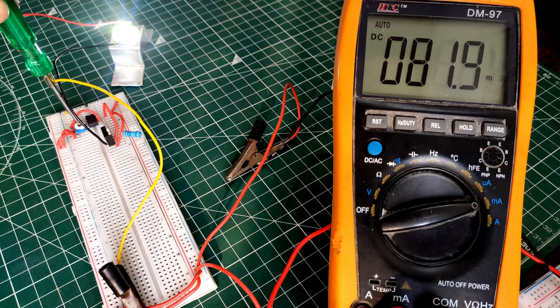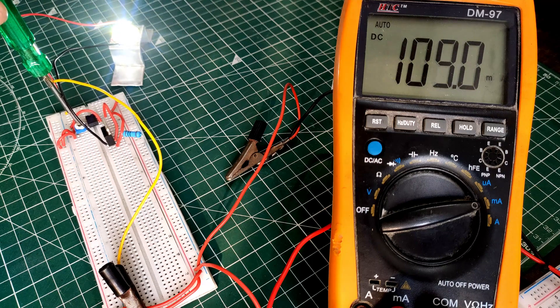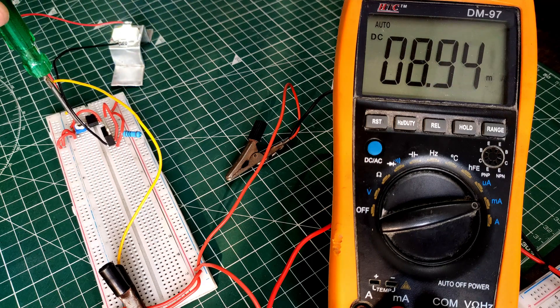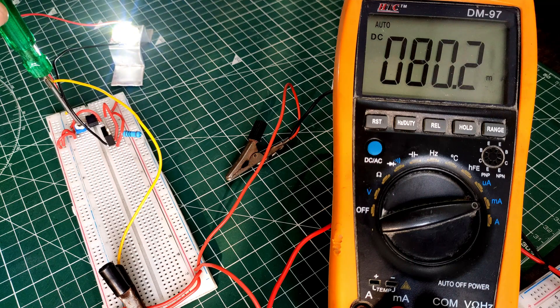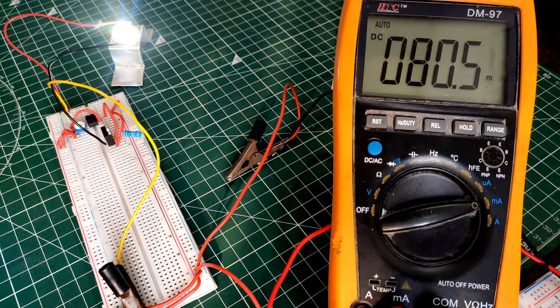And we can vary the current using the potentiometer. And if we set the potentiometer or we set the current to a particular value, it will hold the current at that value.